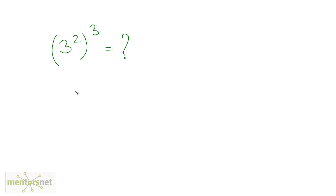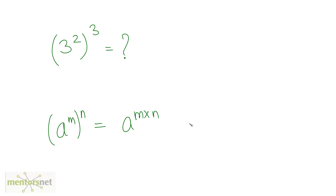The next law: if you have a raised to m, the whole raised to n, then you can write it as a raised to m times n. So the value of 3 raised to 2, the whole raised to 3, will be 3 raised to 2 times 3, which equals 3 raised to 6.